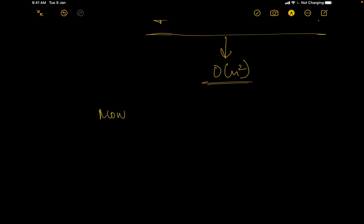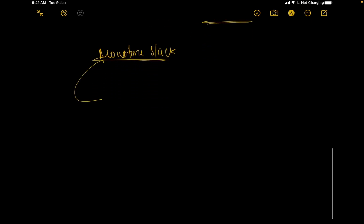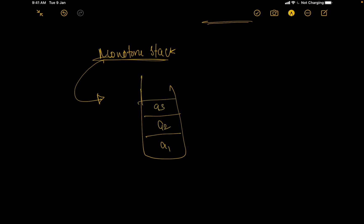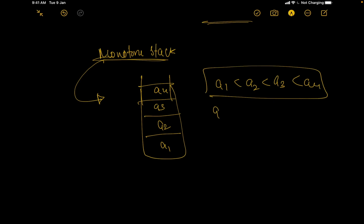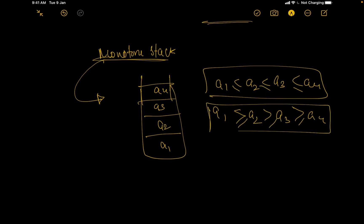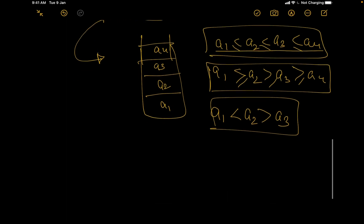We can use a monotone stack. A monotone stack is a data structure that stores values in either ascending or descending order. For example, a stack [a1, a2, a3, a4] where elements are in strictly increasing or decreasing order is a valid monotone stack. A stack that violates this ordering is not valid. So a certain order must always be maintained.